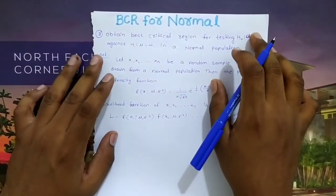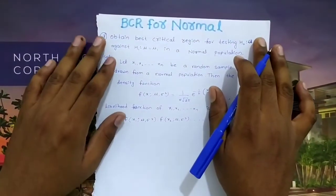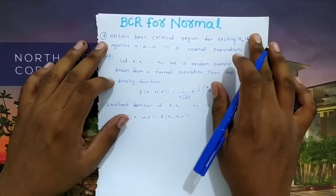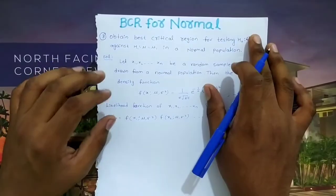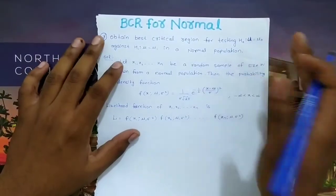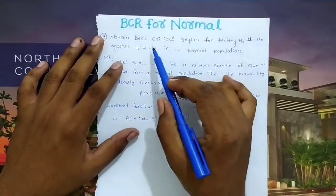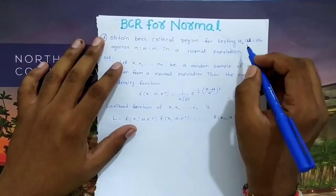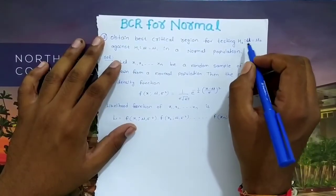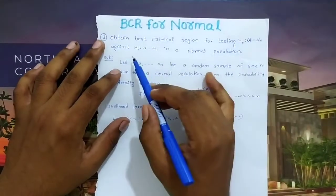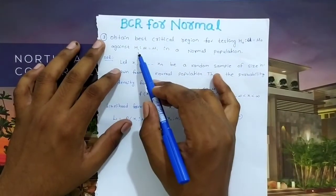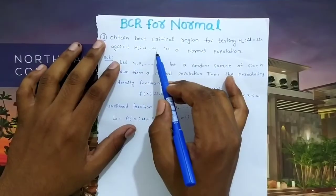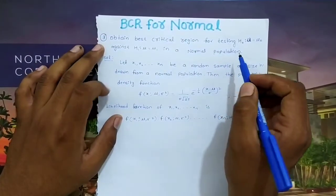Hello everyone, welcome to our channel. In this video, we will find the best critical region for a normal population. We will obtain the best critical region for testing the null hypothesis H0: μ = μ0 against the alternative hypothesis H1: μ = μ1 in a normal population.